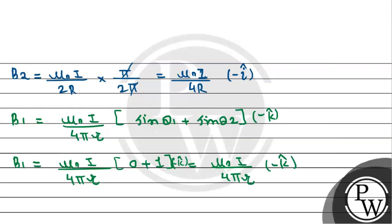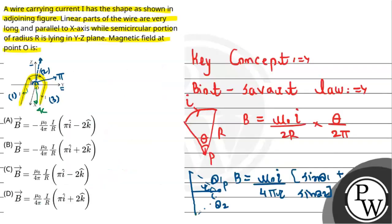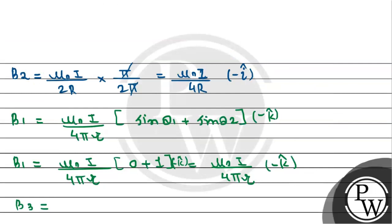In the same way, the magnetic field for the third section B3 will be the same: mu naught I divided by 4 pi R minus k hat, because both are infinite current carrying wires.